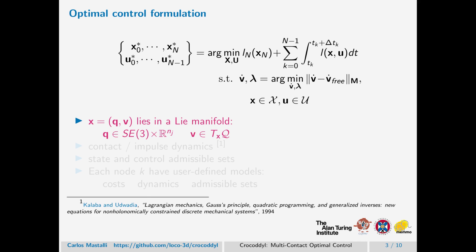Where the state is described with the configuration point q and its velocity. Both quantities lie in a Lie-manifold.